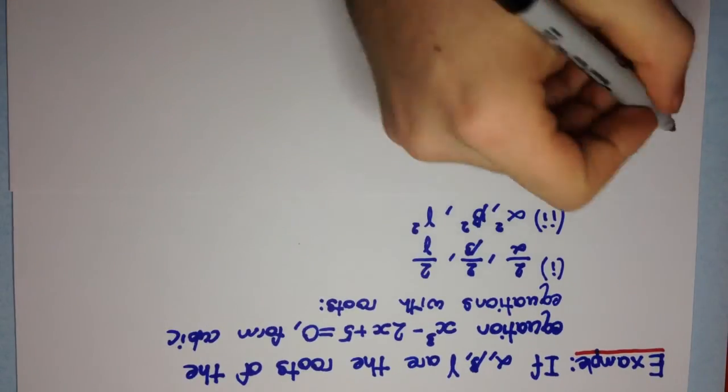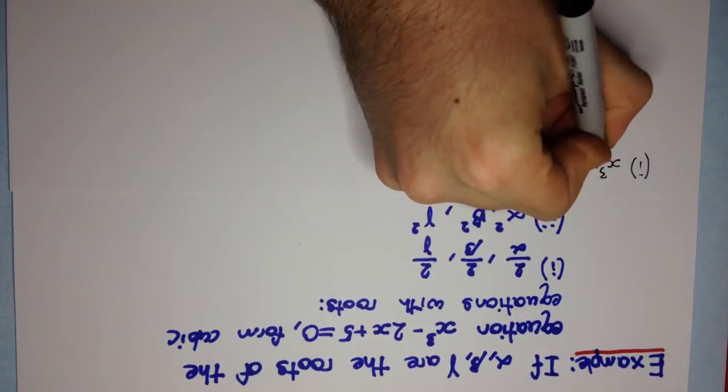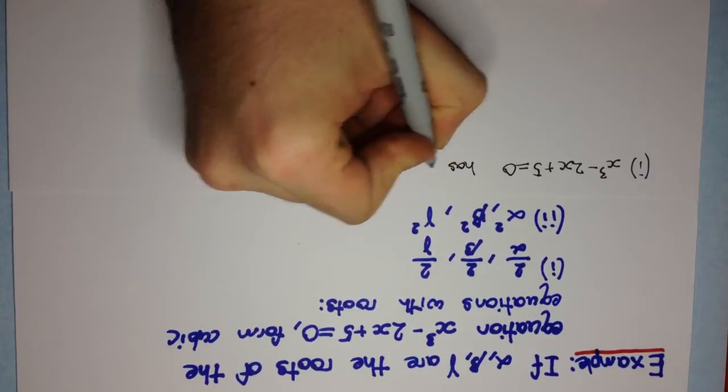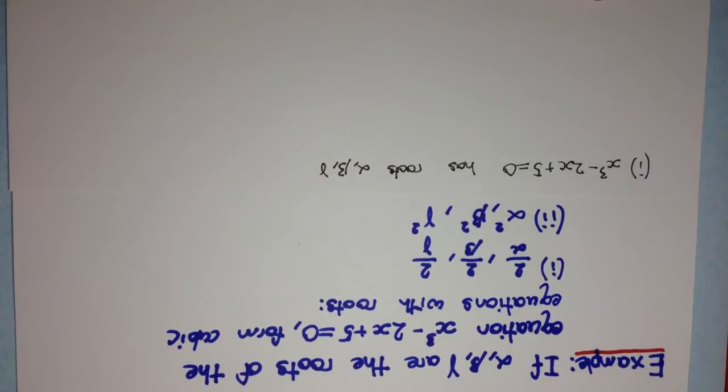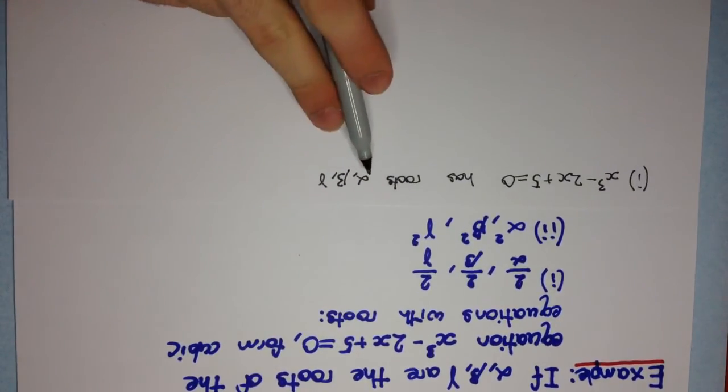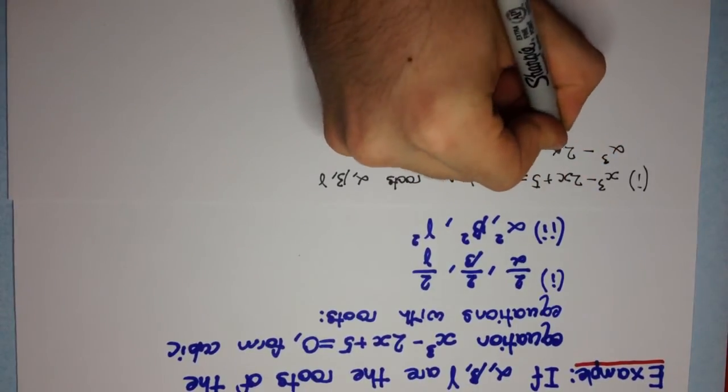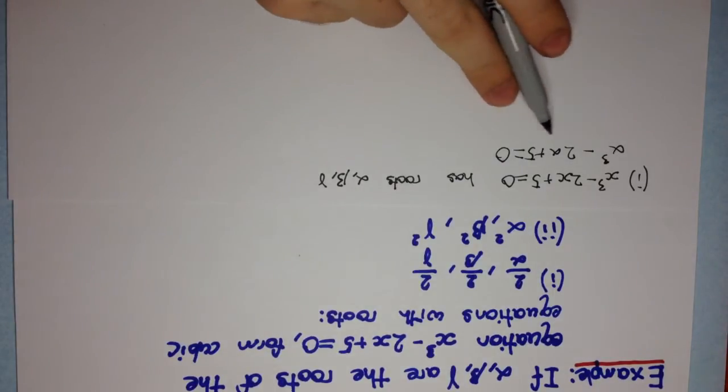Let's have a look at the first one. This equation has roots alpha, beta, and gamma. So what does it mean for it to have roots alpha, beta, gamma? That means alpha, beta, and gamma all satisfy this equation. So therefore we can have alpha cubed minus 2 alpha plus 5 is equal to 0. Now we only really need to substitute one in to see what's going on here.